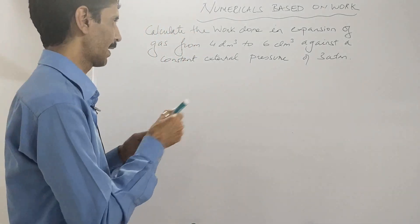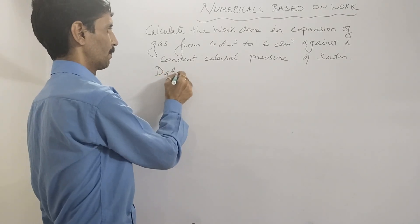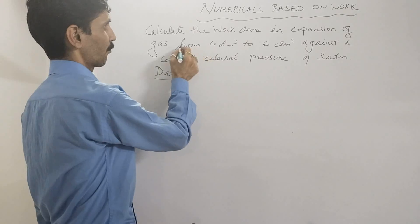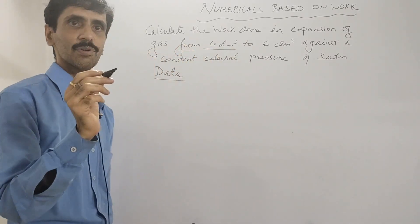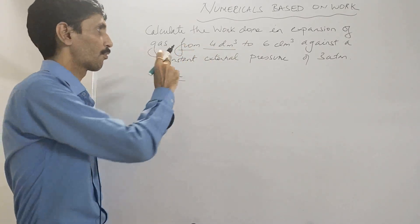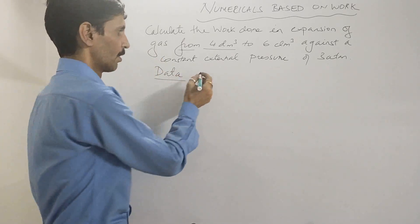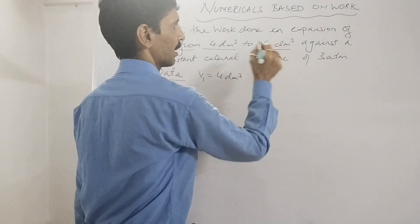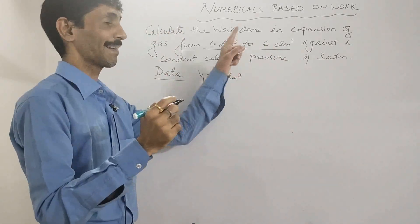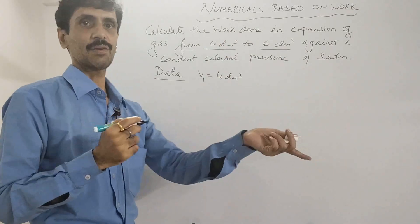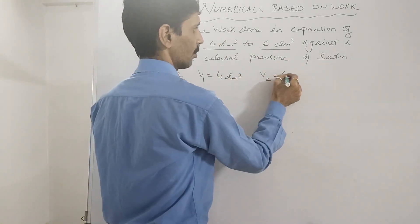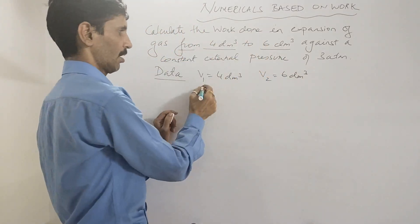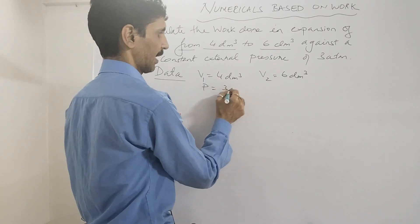Starting with the data: the initial volume v1 is 4 dm³. dm³ is a unit of volume. The final volume v2 is 6 dm³. Against a constant external pressure of three atmospheres.